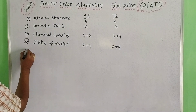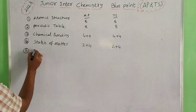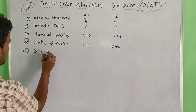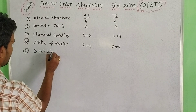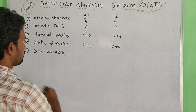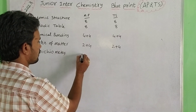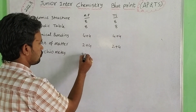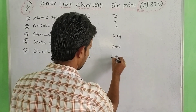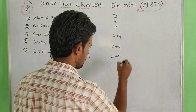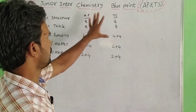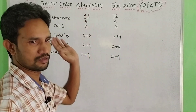Next, the 5th lesson: stoichiometry. Stoichiometry has 2 plus 4 marks weightage. So maximum, AP and TS are similar for stoichiometry.